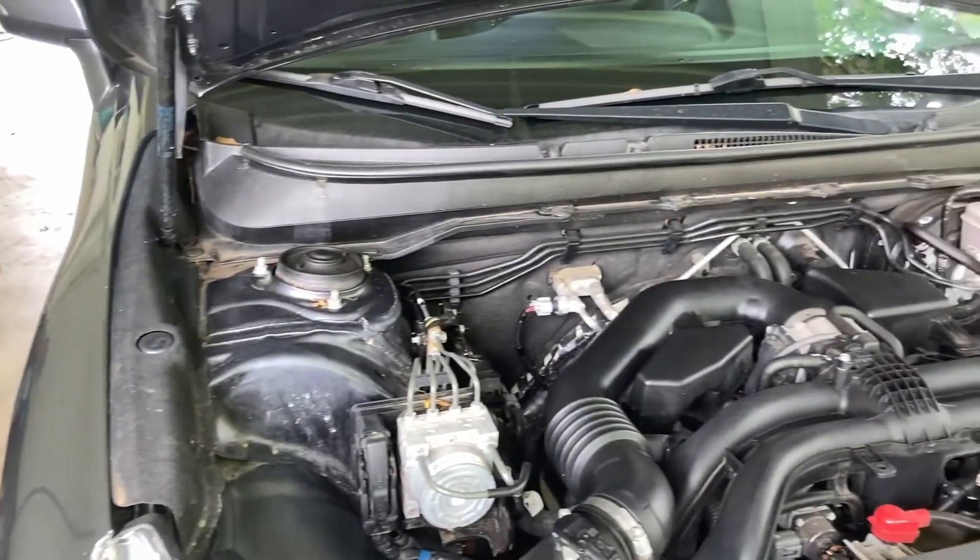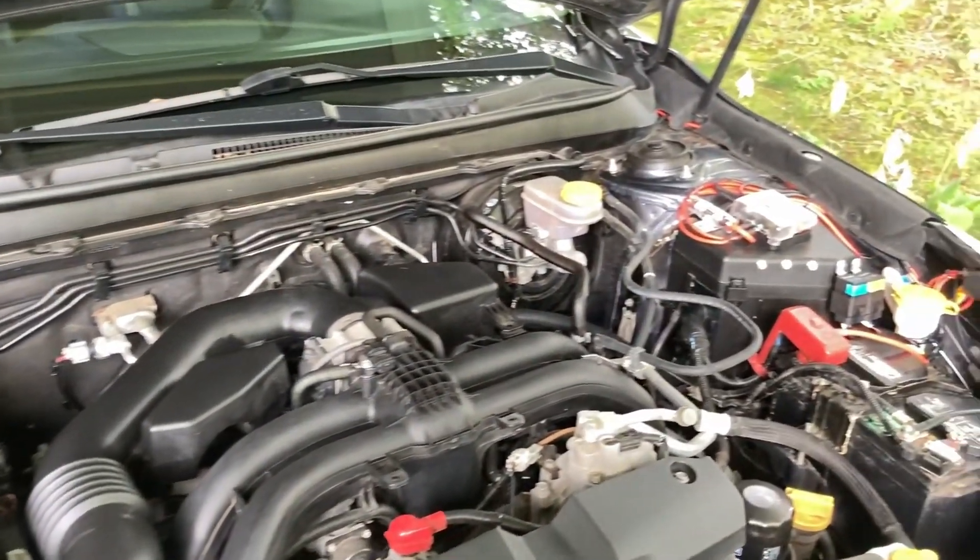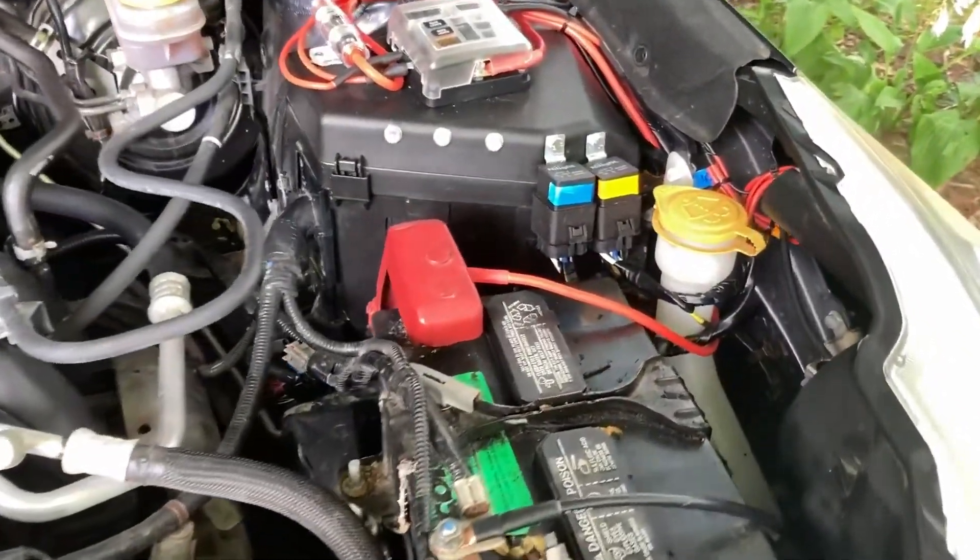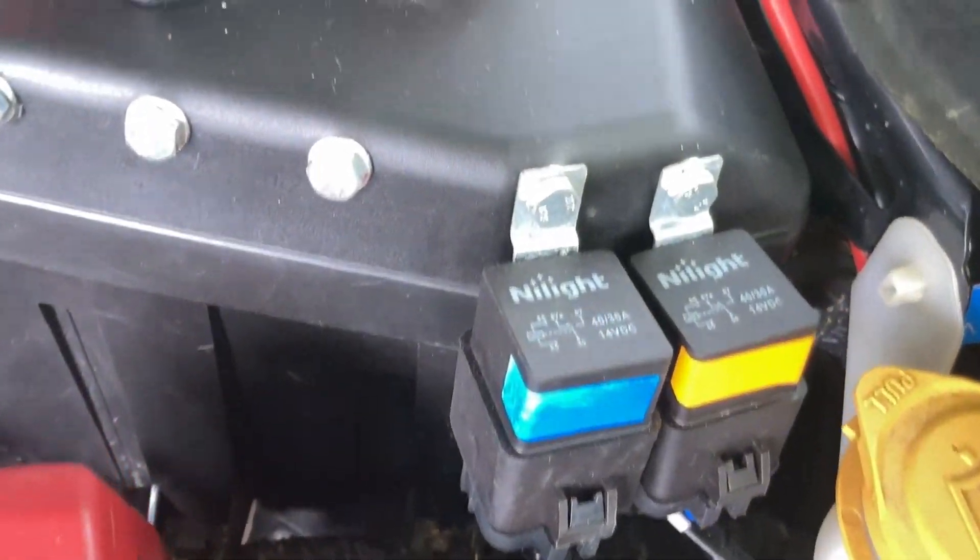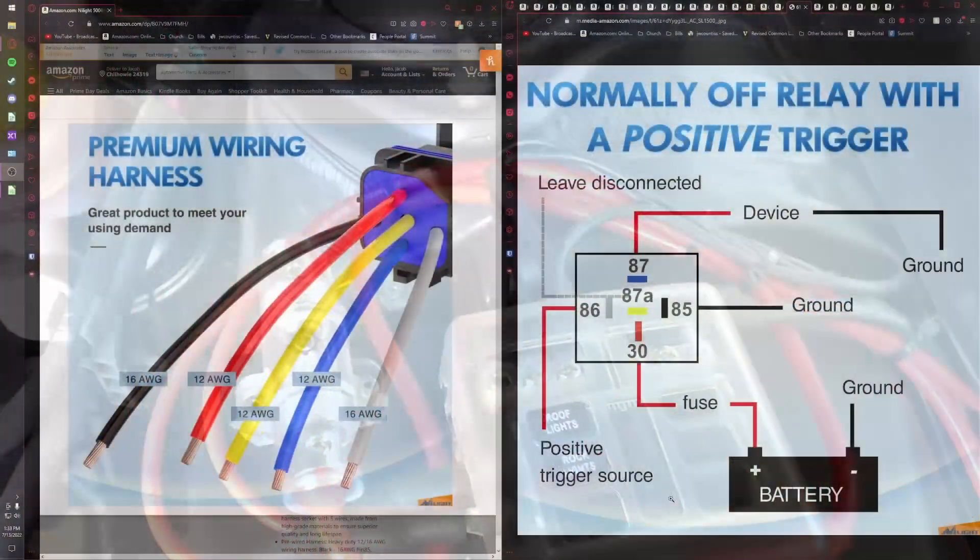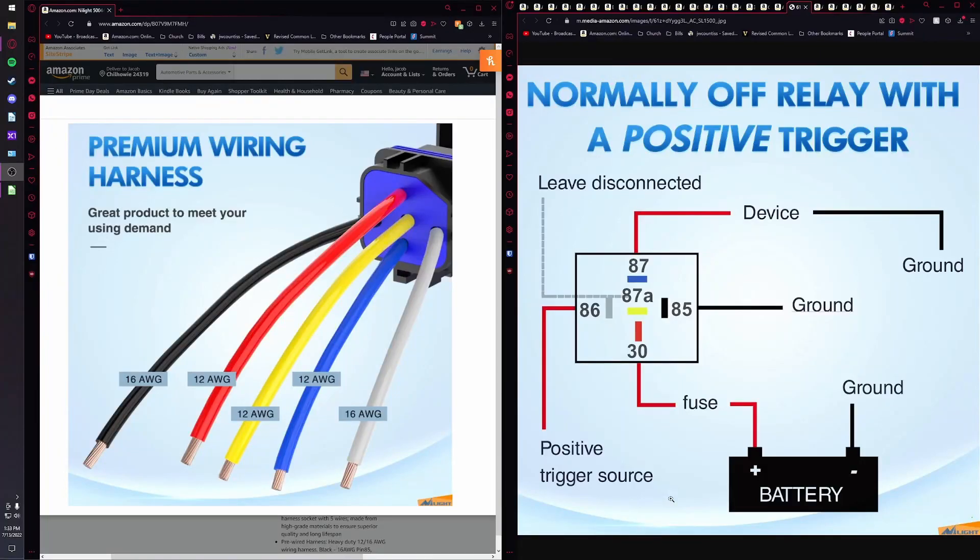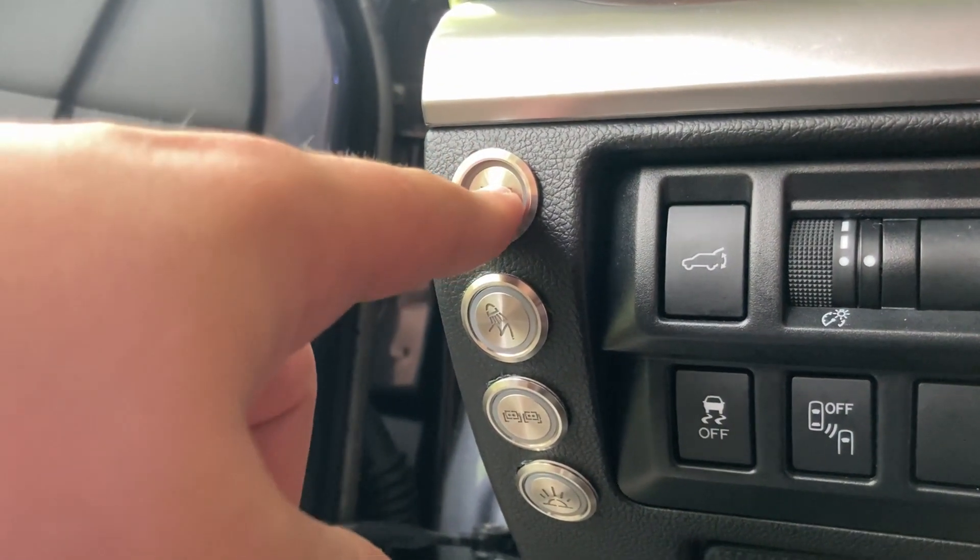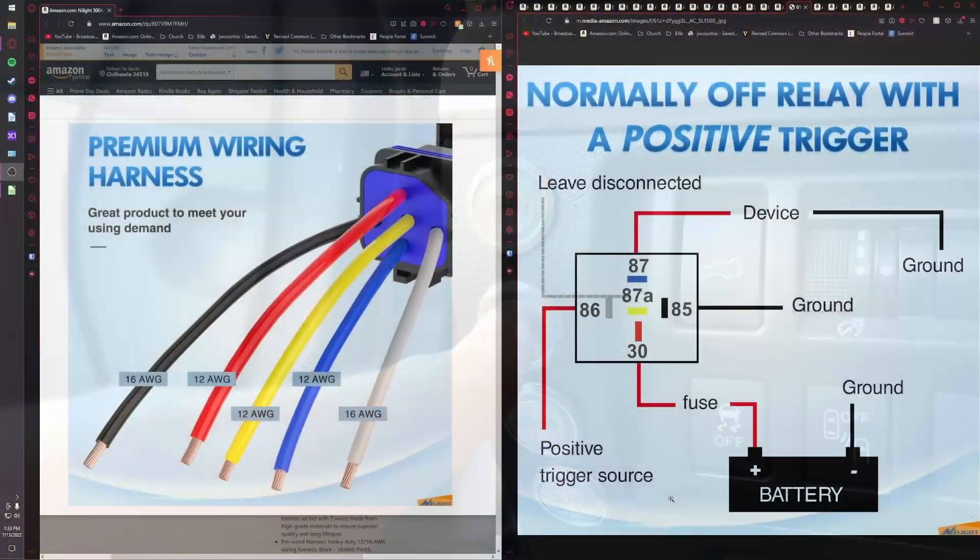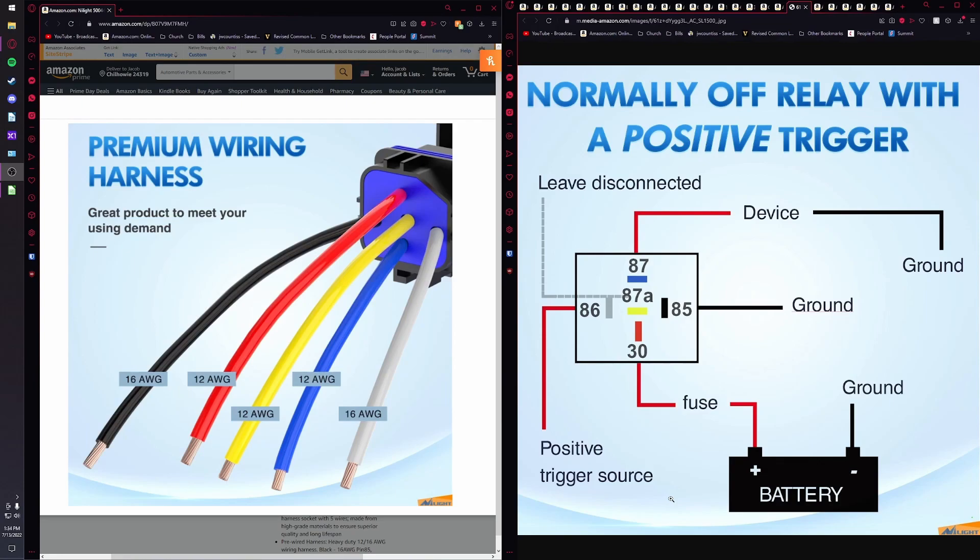Now we're going to go over how to wire a relay. And just like the switch, there are a couple ways to wire this one up. The way that we're going to talk about today is how to wire a positive trigger source. So that means when you flip the switch, your switch will then start providing current to the relay. So there are five wires on a Bosch style relay: there is black, red, yellow, blue, and white.